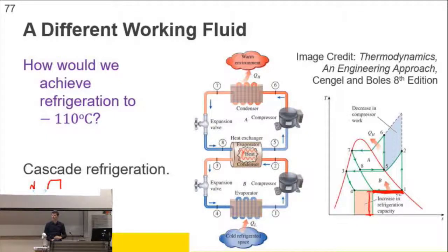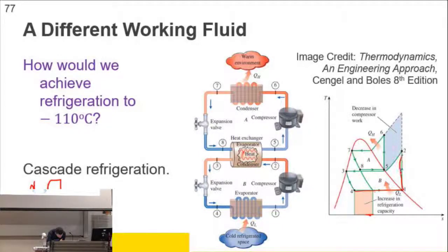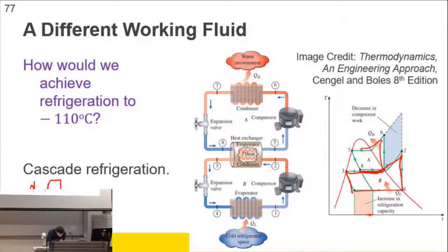If you wanted to extract this much heat in a single cycle, then you'd have to compress the refrigerant that much and bring it down to state point seven. If you use a cascade arrangement instead, you can have one cycle going between those points, and across here it's transferring heat to the next cycle which runs between those state points. We actually find that the length of the refrigeration line is longer, so you get an increase in refrigeration capacity.